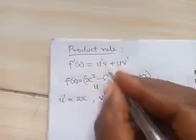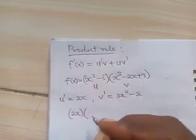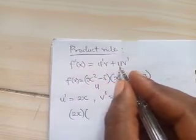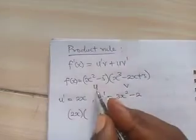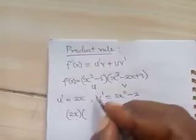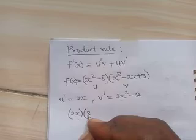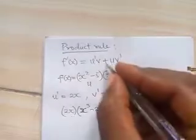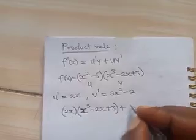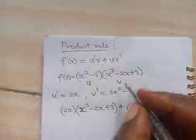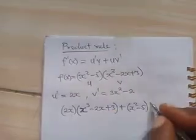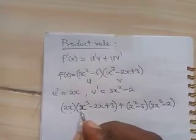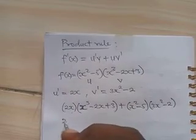Now using the formula: u prime times v plus u times v prime. u prime is 2x, we keep v constant which is (x cubed minus 2x plus 3), plus we keep u constant which is (x squared minus 5), times v prime which is (3x squared minus 2).